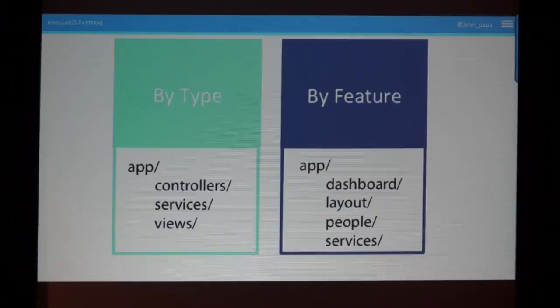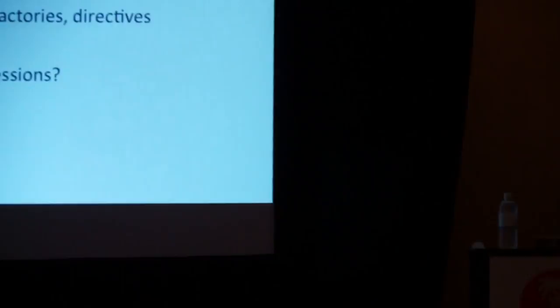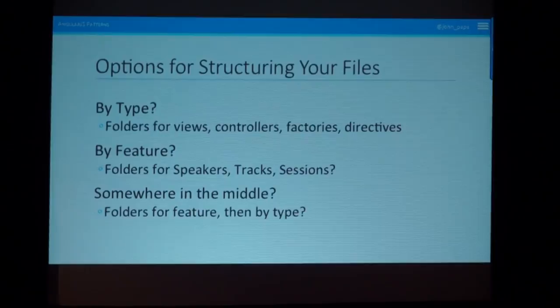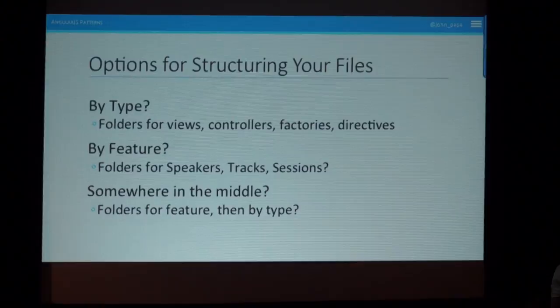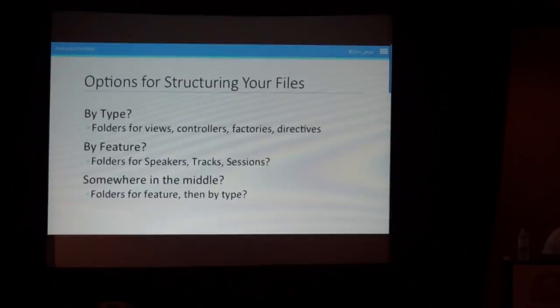I'm a big fan of YAGNI — You Ain't Going to Need It. Don't develop for something you're not sure you'll need. Do the things you need for user stories, and don't put yourself in a position where you can't expand later. There's also a hybrid approach my friend Dan Walleen likes: folders by feature and then by type within them. If a feature gets large with lots of files, break that subfolder out by type. The key is making your code locatable and easy to find.